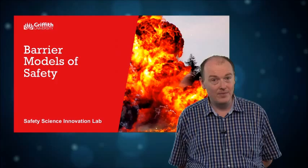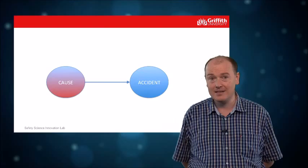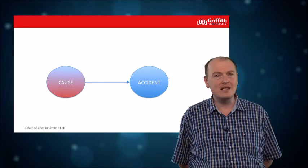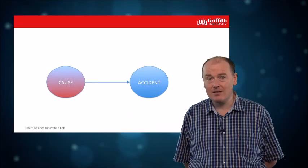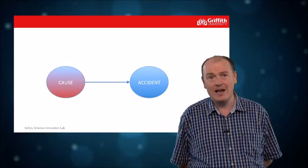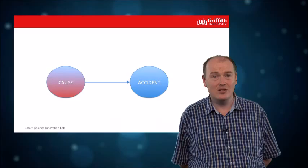Now let's start with a concept that might seem fairly straightforward. What does it mean for something to cause something else? We have a cause, we have an accident. Seems fairly straightforward until you ask yourself, what does that arrow actually mean? Is it something statistical? Is it something mathematical? Is it something physically determined?